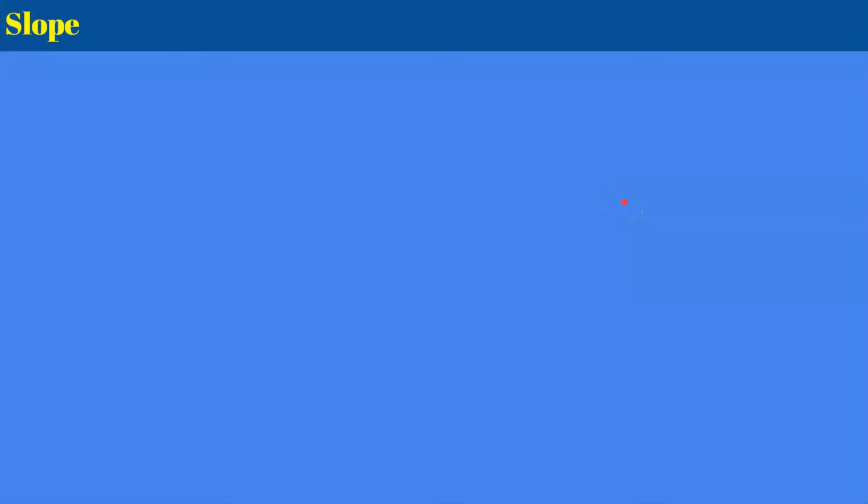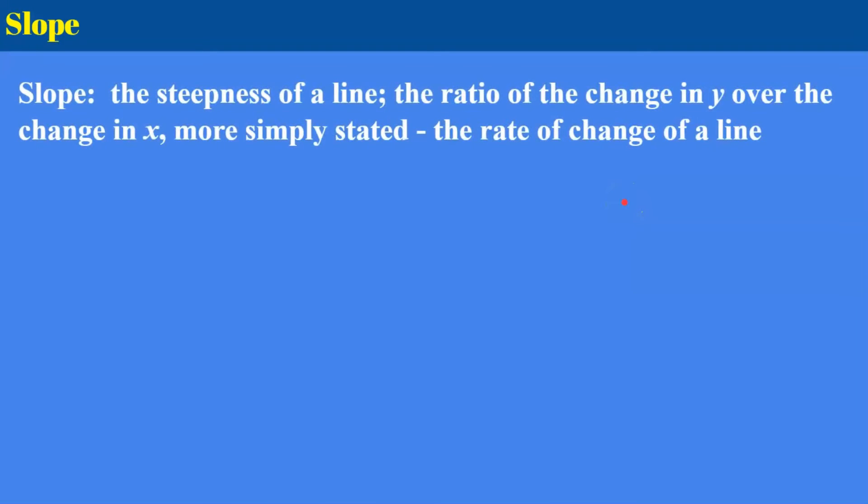So first let's review what slope is. Slope is the steepness of a line and it can also be written as the ratio of the change in y over the change in x. So it's a ratio or rate if you're talking about a specific real world problem, and more simply stated we can say it's the rate of change of a line.